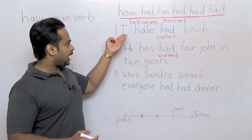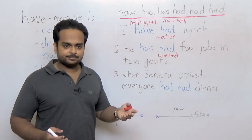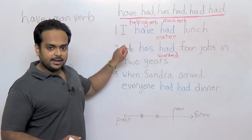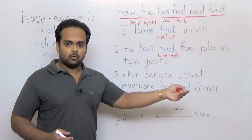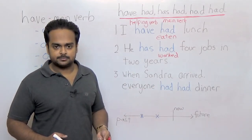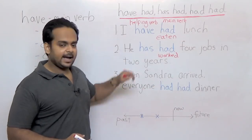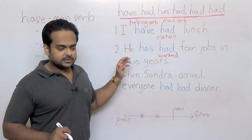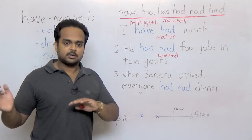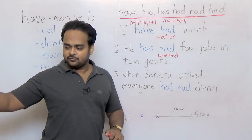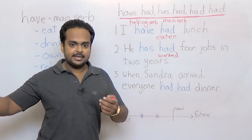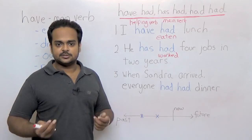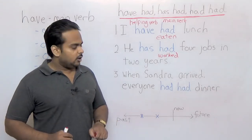If the subject is he, she or it, we say has. If the subject is I, you, we or they, we use have. So if the subject here were I, this would be have. I have had four jobs in two years. But since it's he, it's has. And once again, the tense here is the present perfect tense and this has shows some connection to the present. So he has had four jobs in two years and maybe he still works in one of those jobs. So it's connected to the present in some way.